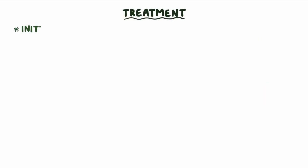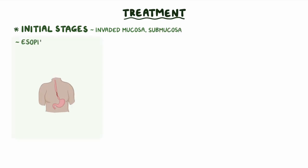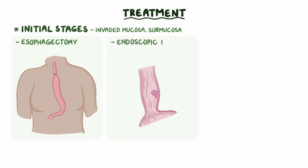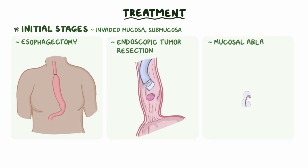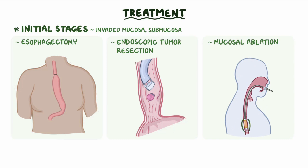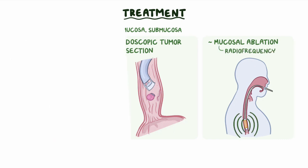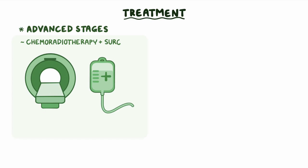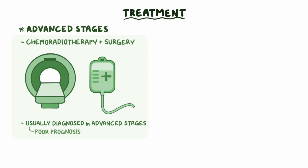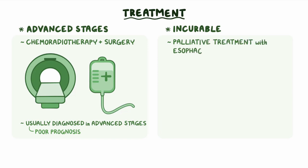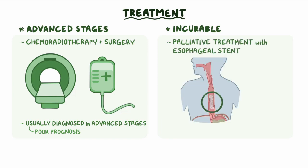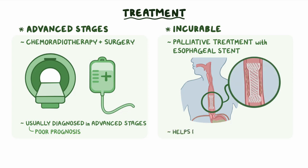Treatment depends on the stage. For initial stages, when the cancer has invaded just the mucosa and submucosa, options include esophagectomy, endoscopic tumor resection, or mucosal ablation, which is when the cancerous mucosa is removed by radiofrequency. For more advanced stages, chemoradiotherapy is used in combination with surgery. Unfortunately, esophageal cancer is usually diagnosed in advanced stages, so it's considered a poor prognosis cancer. When the cancer is incurable, palliative treatment with an esophageal stent — a tiny tube placed inside the esophagus to keep it dilated — usually helps reduce dysphagia.